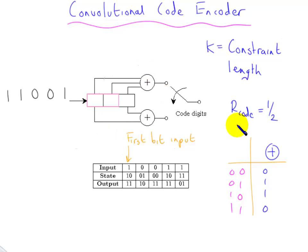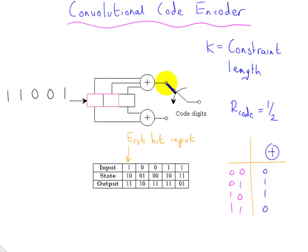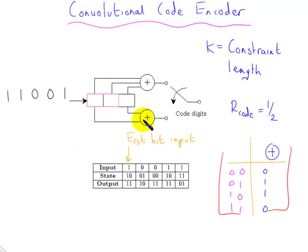Here is a very simple rate-half convolutional code encoder, where you have a shift register. There are three shift registers, so whatever comes in moves along and then pops out. The contents of these shift registers are modulo-2 added to produce a single code digit — the modulo-2 operation is simply the XOR logic gate. The contents of two of the shift registers are modulo-2 added to produce the second code digit, and these two are multiplexed to produce the output stream.